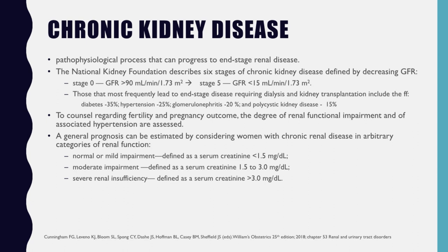Next we talk about chronic kidney disease — a pathophysiological process that can progress to end-stage renal disease. The National Kidney Foundation describes six stages defined by decreasing GFR, from stage 0 (GFR greater than 90 mL/min/1.73 m²) to stage 5 (GFR less than 15 mL/min/1.73 m²). Those most frequently leading to end-stage renal disease requiring dialysis and kidney transplantation include diabetes, hypertension, glomerulonephritis, and polycystic kidney disease.